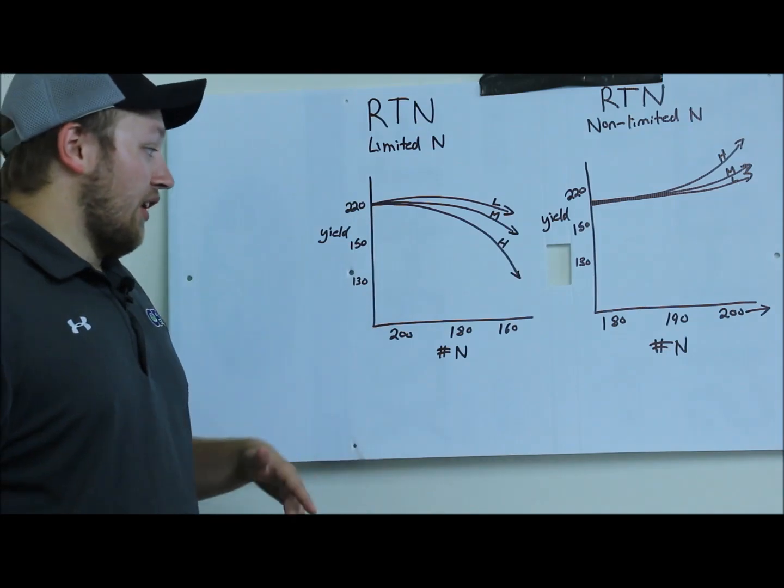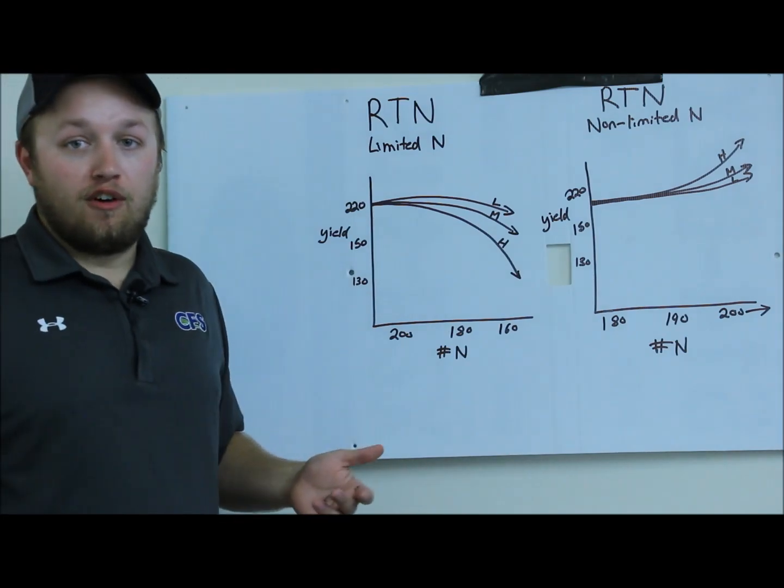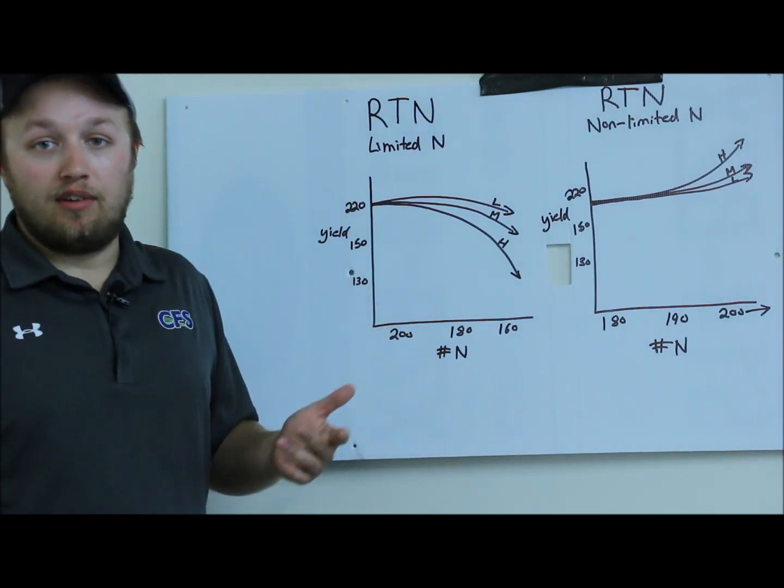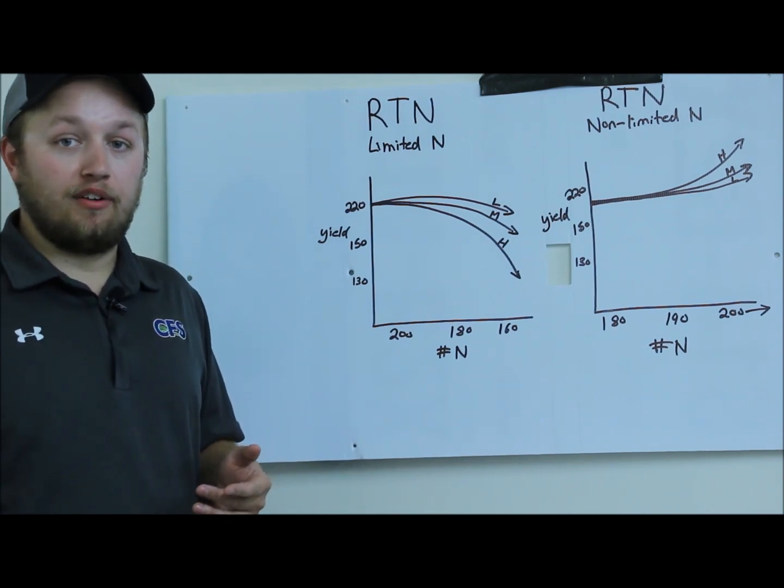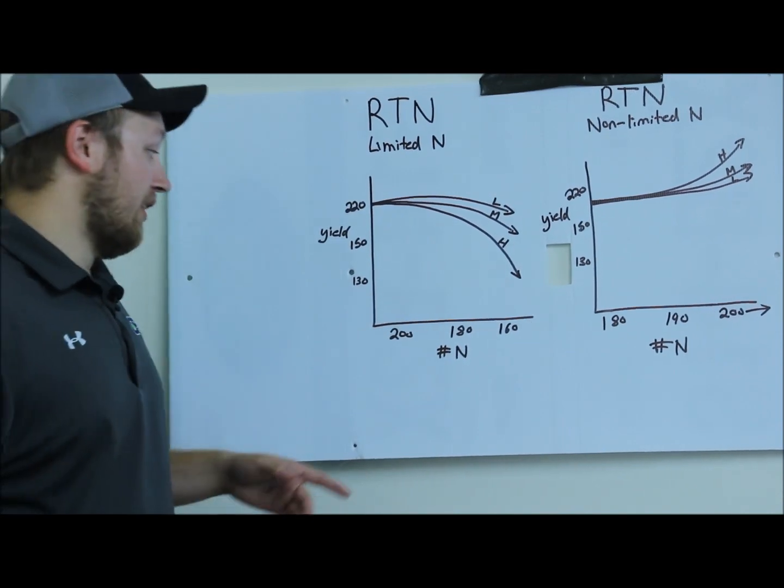Let's say you have 150 pounds that you put down in the fall via anhydrous, urea, or whatever it might be, come back with 30 pounds in the spring, and then maybe follow up with another 30 to 40 pounds variable rate in-season via side dress.